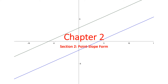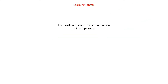Welcome back to chapter 2. In this section we are going to look at the point-slope form of a line. In section 1 we looked at the slope-intercept form of a line. They both have some good uses, and I'm going to hopefully be able to show you where each of them is used a bit more easily than the other, and how they're also very similar. Our learning target: I can write and graph linear equations in point-slope form.